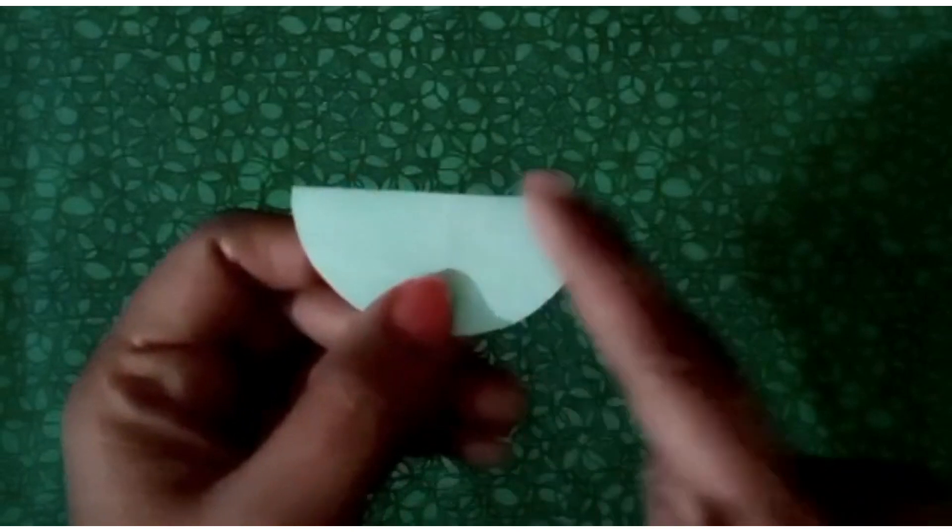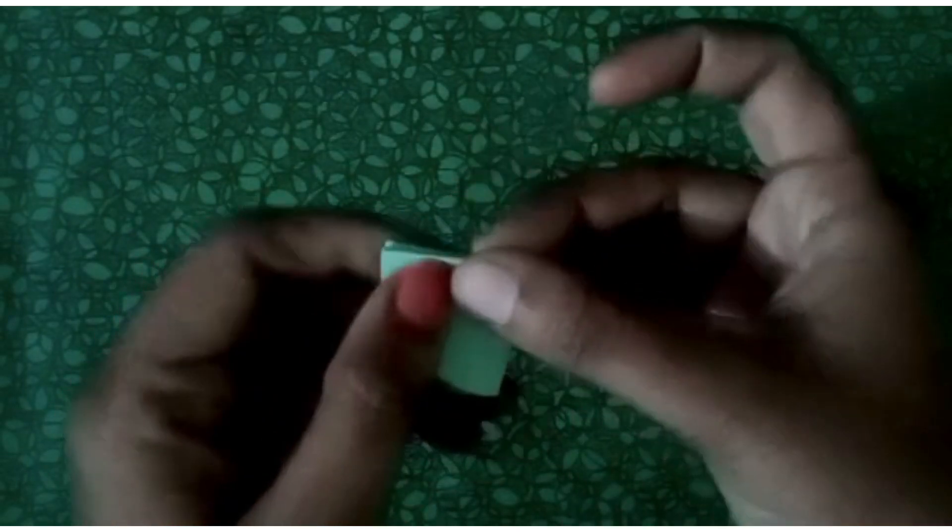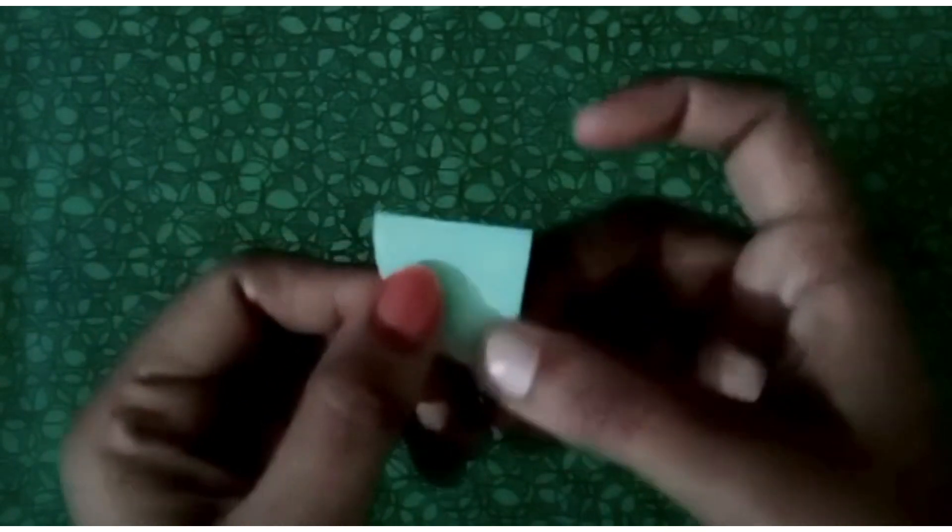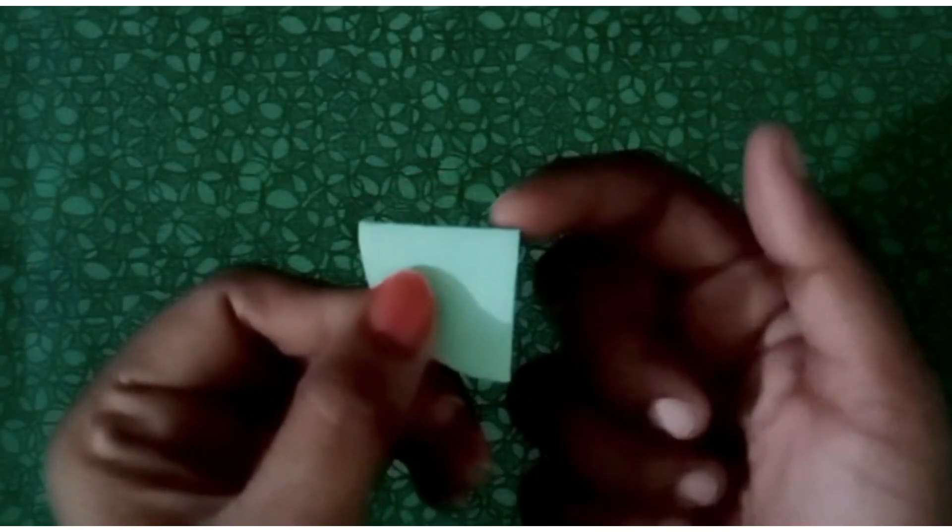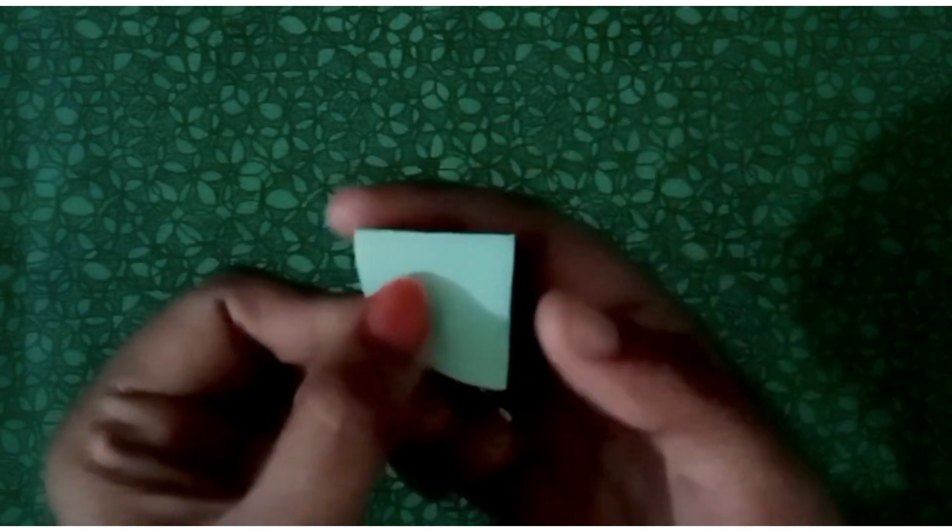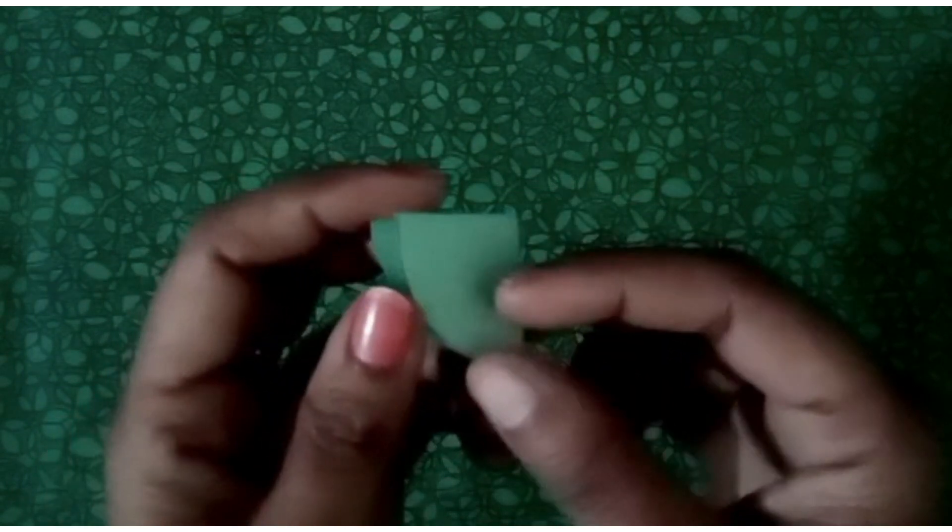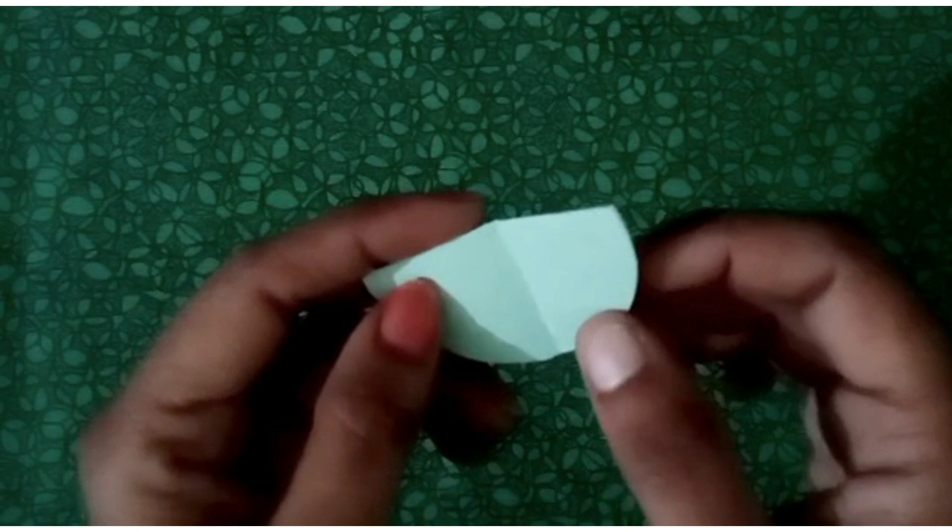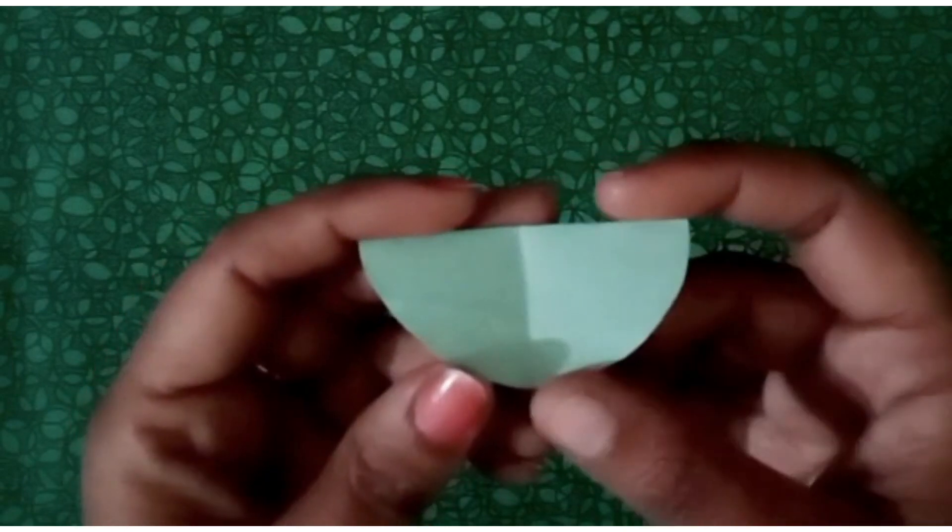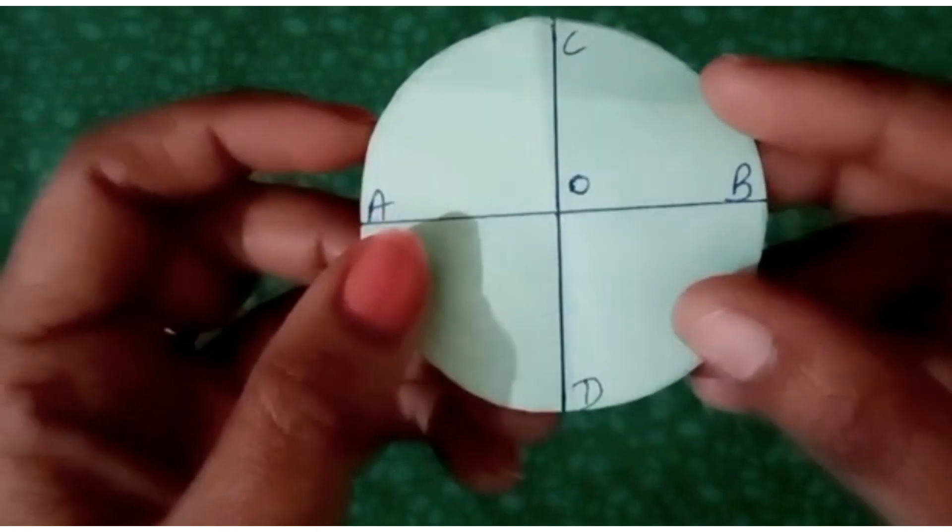Now dear students, let's again fold this diameter from the middle. And on folding diameter, what do we get? Students, on folding diameter, we get radius of the circle. So let's open and see how many radii do we get. Students, we got four radii in this circle.